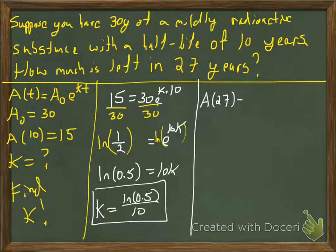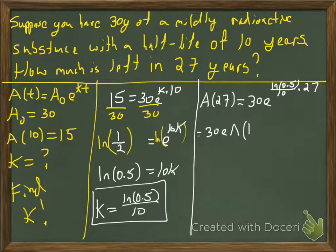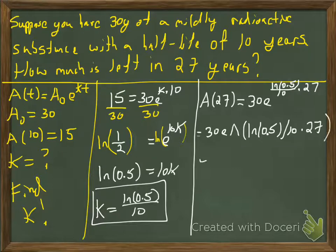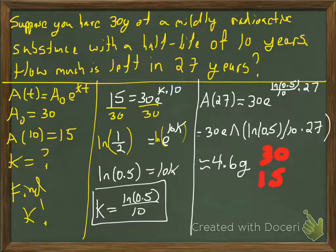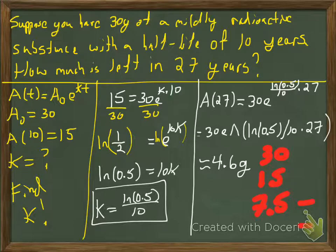Now I'll find the amount at 27 years. I have all the variables, so I just plug them in. Be careful with parentheses in the calculator to make sure the entire exponent is included. The result is about 4.6 grams. As a sanity check: we started with 30, had 15 at 10 years, 7.5 at 20 years, and 27 is closer to 30 years — so half of 7.5 is 3.75, making 4.6 grams very reasonable.